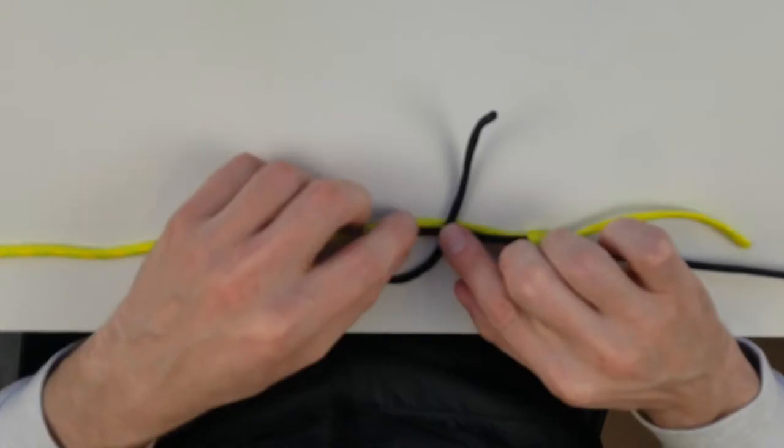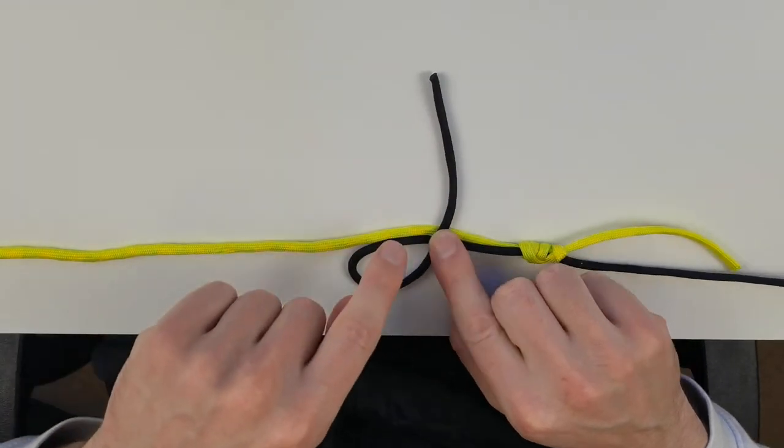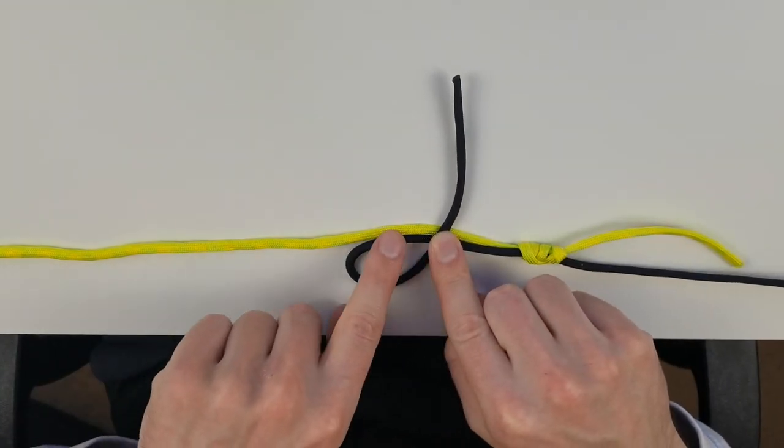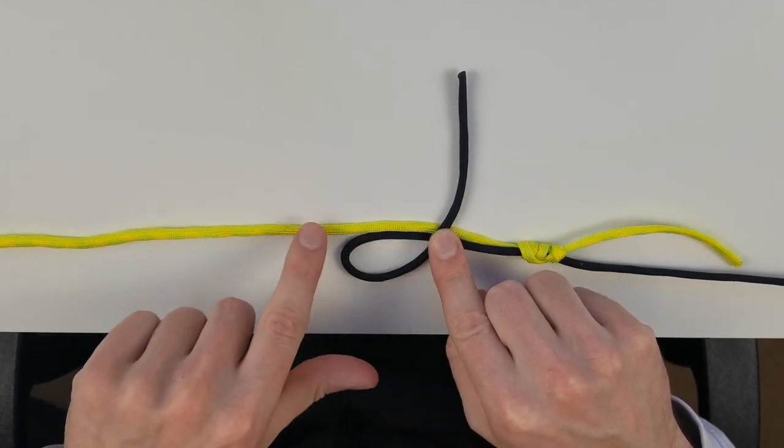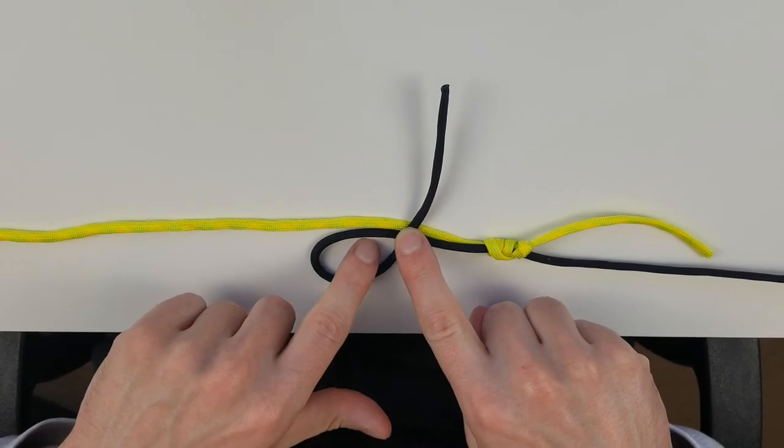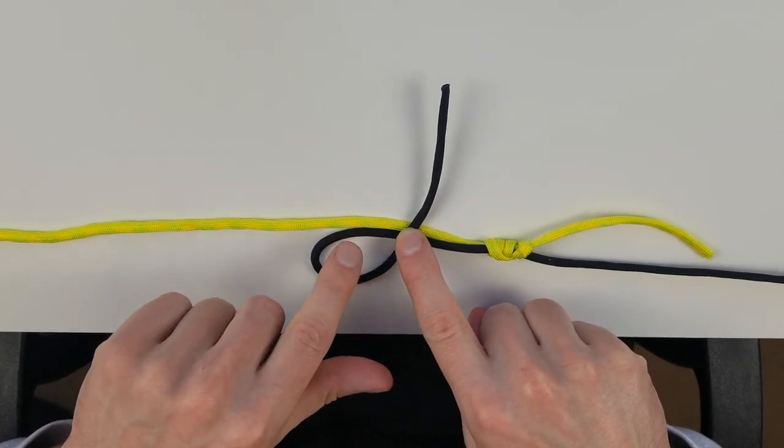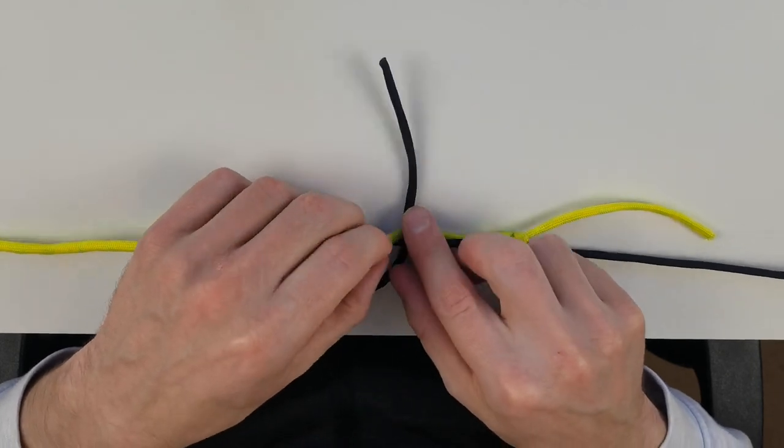The only difference is we're going to take the braided tag end and wrap it eight times around the two lines in this direction. With the mono we did five, with the braid we're going to do eight just because it is slipperier, so you want to make sure it has a lot more grip.